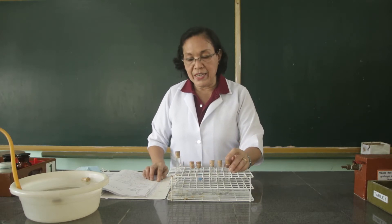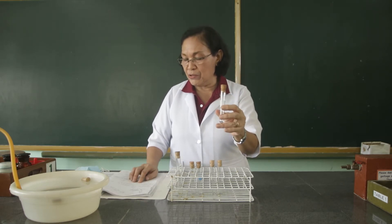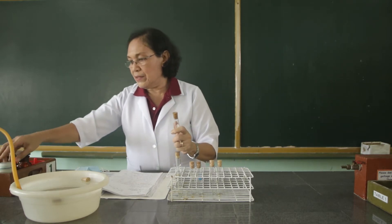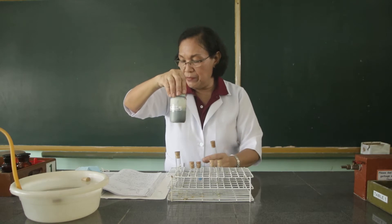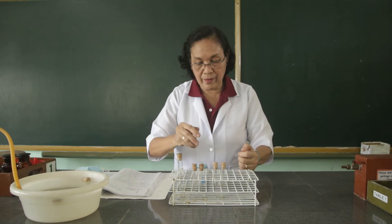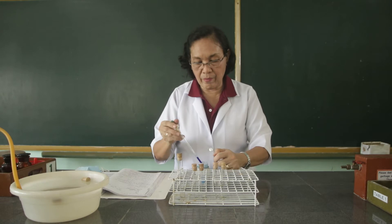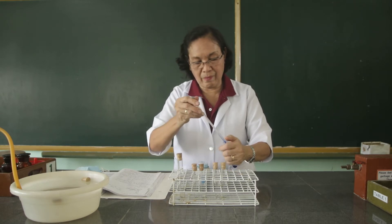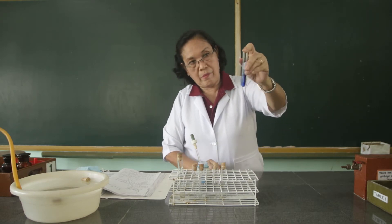With one of the acetylene gas test tubes, we are going to add 5 ml of ammoniacal solution of cuprous chloride. This is the cuprous chloride, and we are going to add 5 ml to the acetylene gas. Observe what happens.